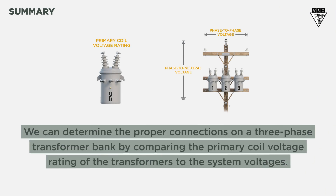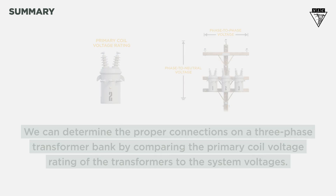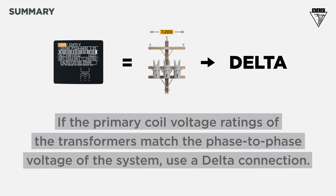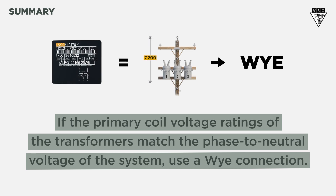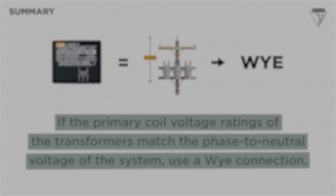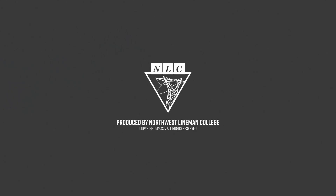So what did we learn? We can determine the proper connections on a three-phase transformer bank by comparing the primary coil voltage rating of the transformers to the system voltages. If the primary coil voltage ratings match the phase-to-phase voltage, use a delta connection. If they match the phase-to-neutral voltage, use a Y connection. Remember to always check your voltage and rotation according to company procedures. Thanks for watching this Northwest Lyman College tutorial. Work safe out there.